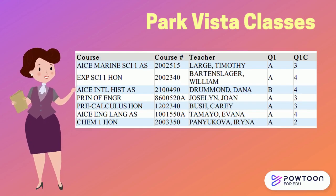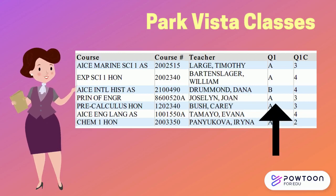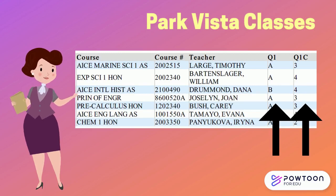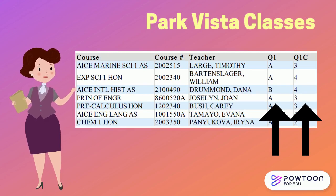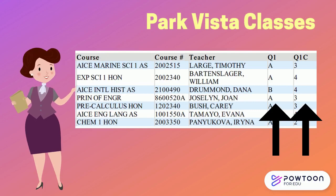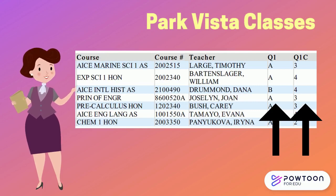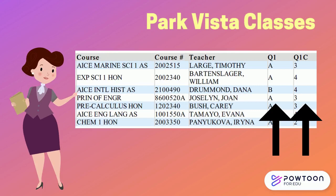Next to your teachers' names you will see a column titled Q1 for quarter one grades. The following column is labeled Q1C for quarter one conduct. Conduct is on a scale of one to four, with four being behavior very constructive to learning.